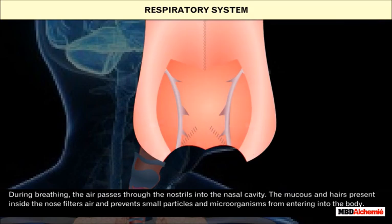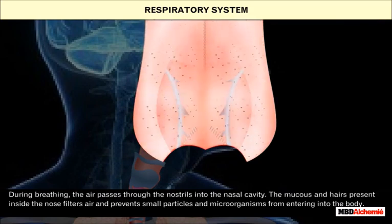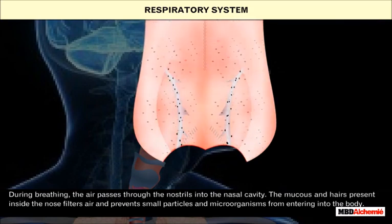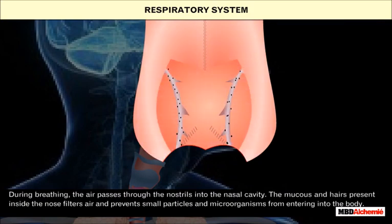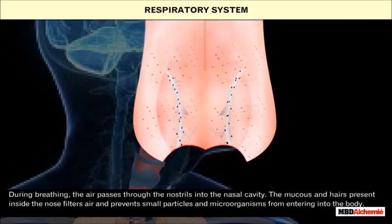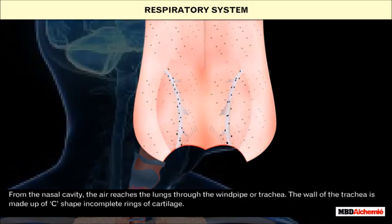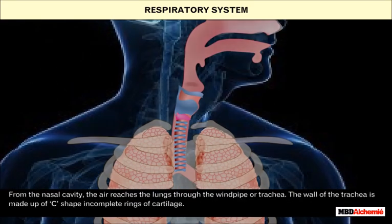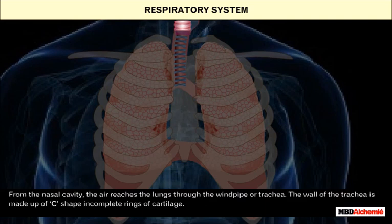During breathing, the air passes through the nostrils into the nasal cavity. The mucus and hairs present inside the nose filter the air and prevent small particles and microorganisms from entering into the body. From the nasal cavity, the air reaches the lungs through the windpipe or trachea.